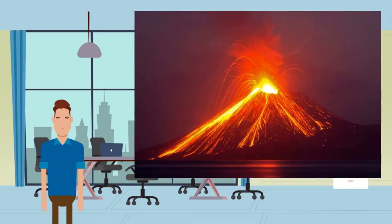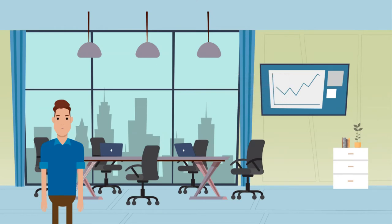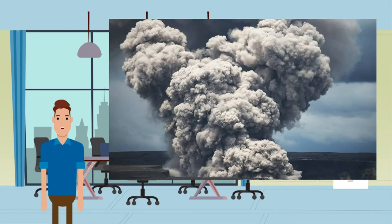Now let's look at volcanic activity. Very large volcanic eruptions have had an effect on the earth's climate. The ash and gas erupted into the atmosphere can cause a cooling effect known as a volcanic winter. Volcanic eruptions do this in two ways: large amounts of volcanic ash can stay in the atmosphere and block out the sun — usually a short-term cooling effect. Volcanic eruptions can also emit sulfurous gases that react to form aerosols which reflect solar radiation; this effect can last several years.